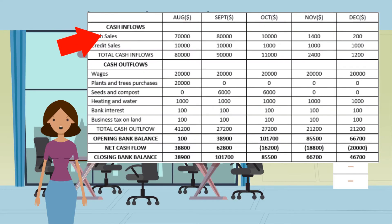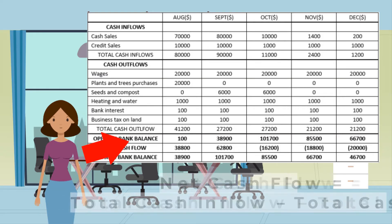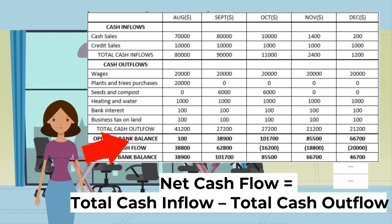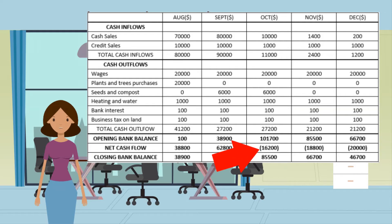Cash inflows are listed first, then cash outflows, and the totals of each are calculated. The opening cash or bank balance is the amount of cash held by the business at the start of the month. Net cash flow equals total cash inflow minus total cash outflow. The net cash flow is added to the opening balance to find the closing cash balance — the amount held at the end of the month. The closing balance for one month is the opening balance for the next. Figures in brackets denote a negative balance, meaning outflows are greater than inflows.